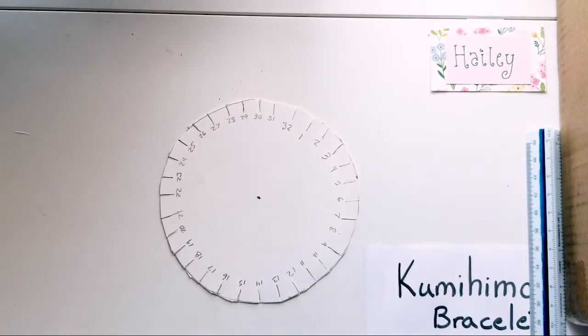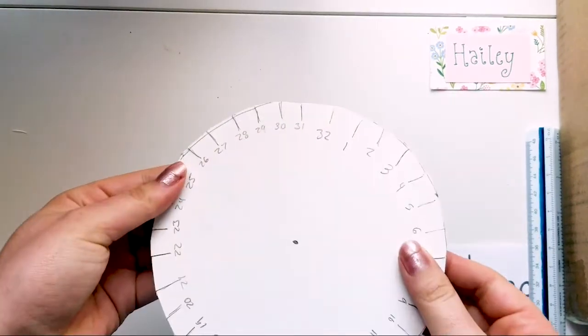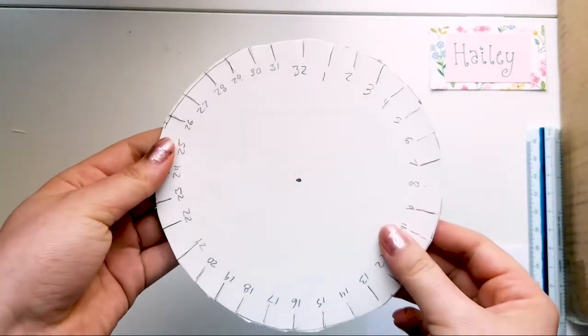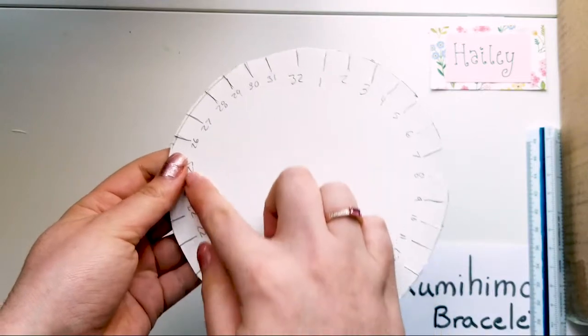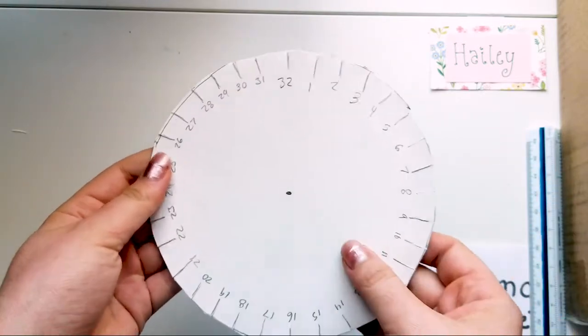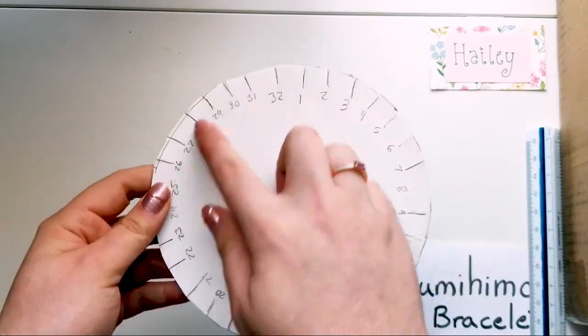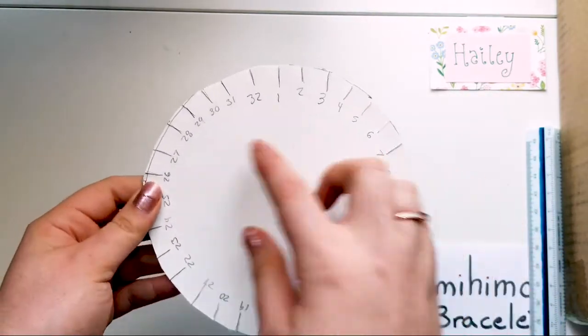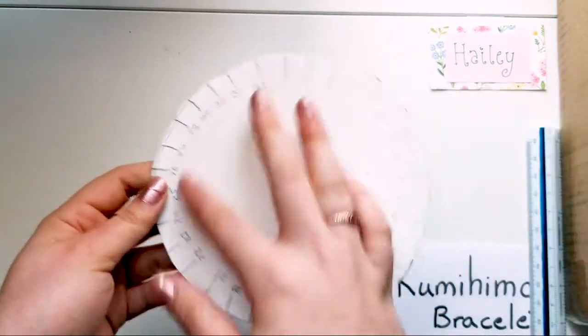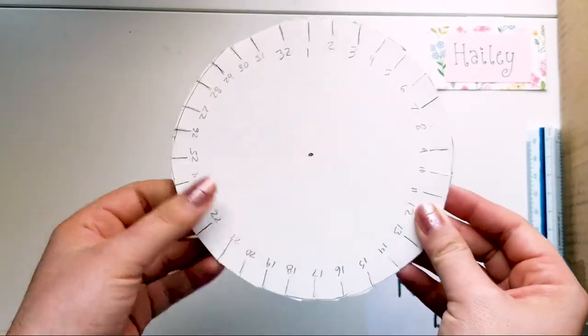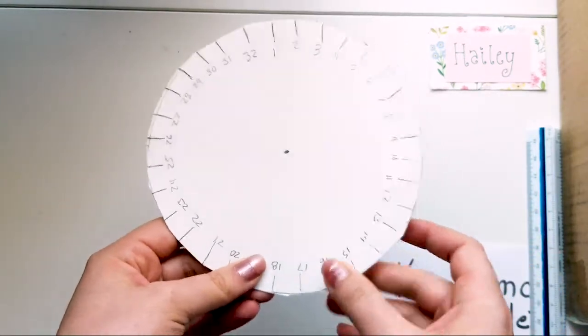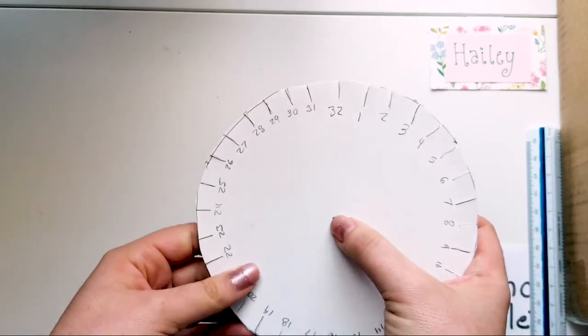So I went through and I numbered all of my little lines. The numbers really just help you kind of keep the direction in which you're going around the circle. And then so if you set it down and you come back, you know that you always go increasing. And this guy's clockwise, it doesn't really matter, it could be counterclockwise. But it's just kind of a way and it'll make it easier to follow along when we start making the bracelet.